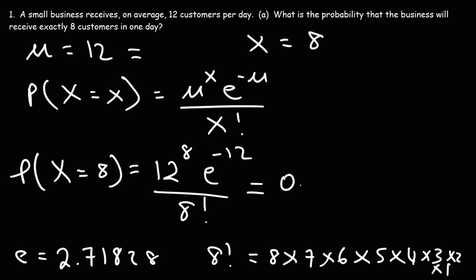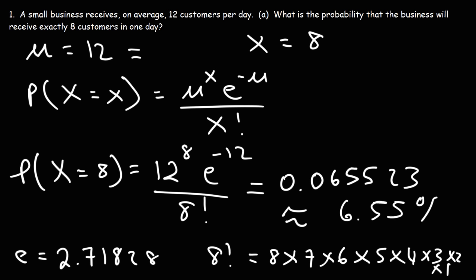If you plug this into your calculator, you should get 0.065523, which, multiplied by 100%, is approximately 6.55%. So that's the probability that this business will receive exactly 8 customers in one day.